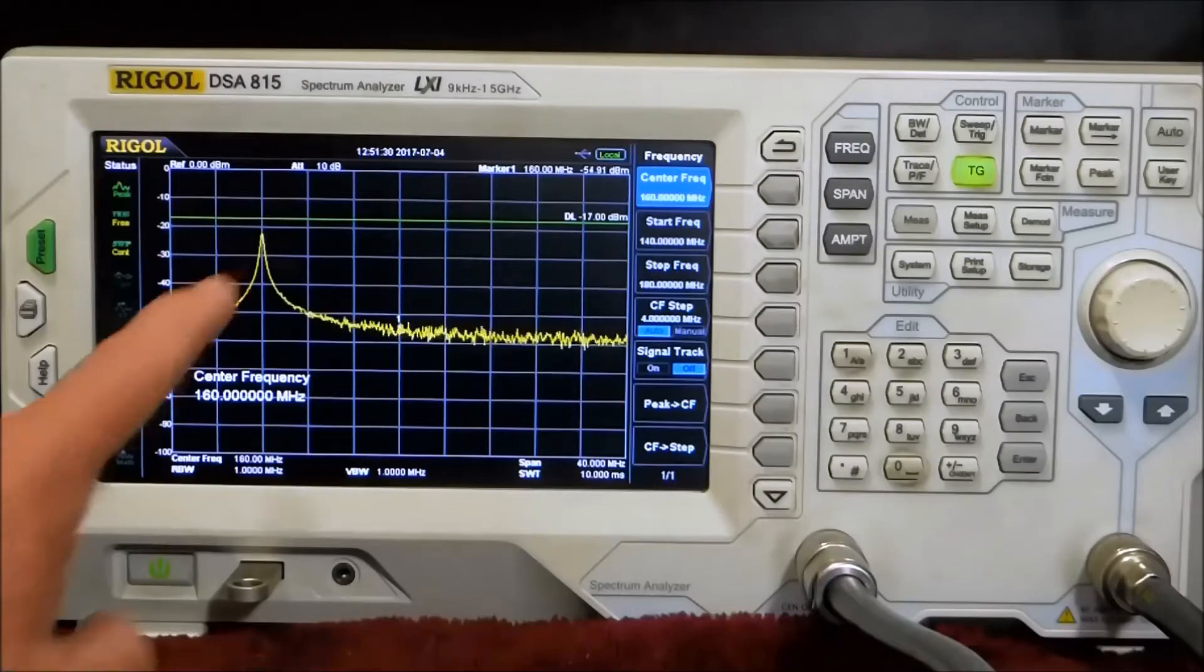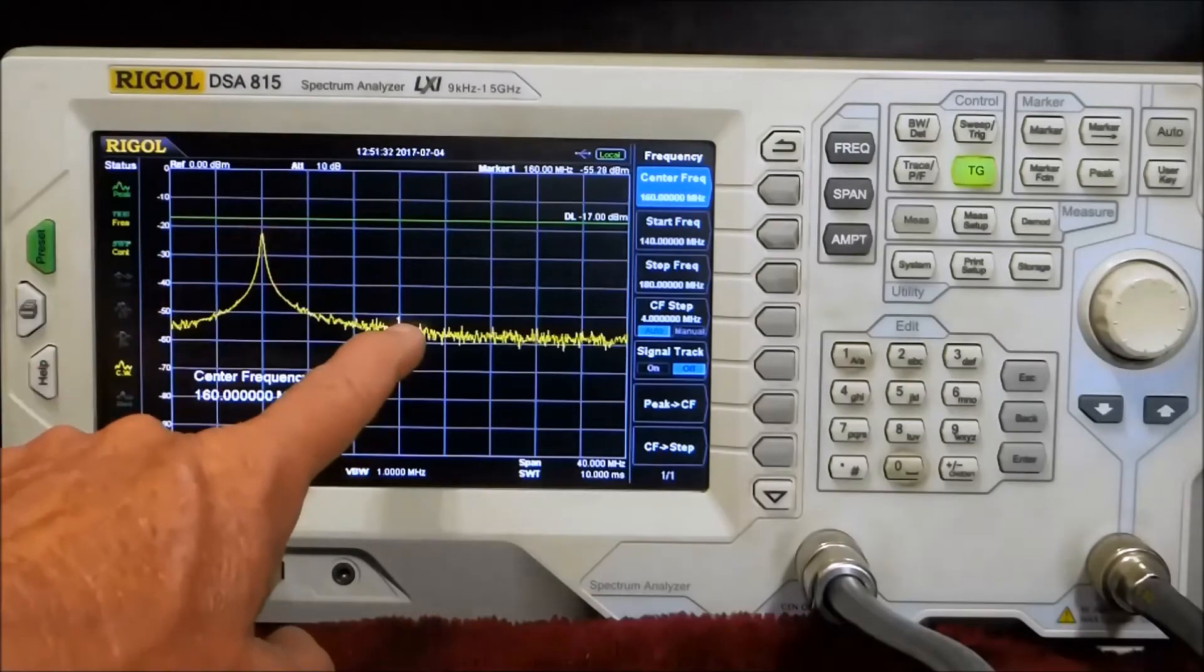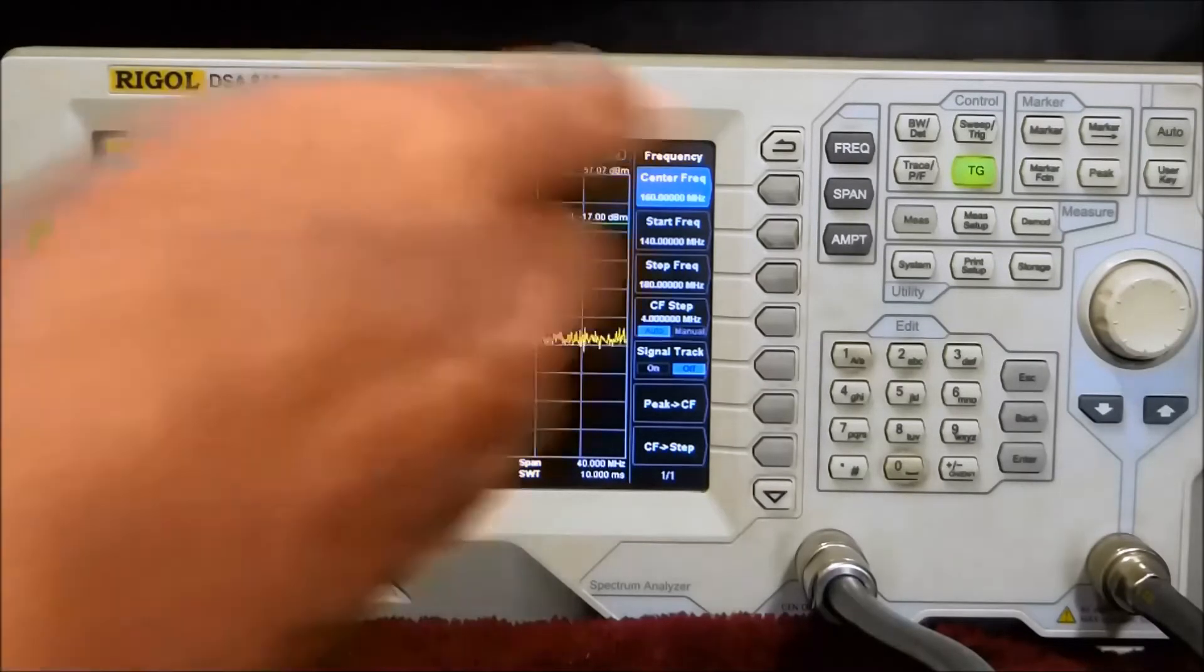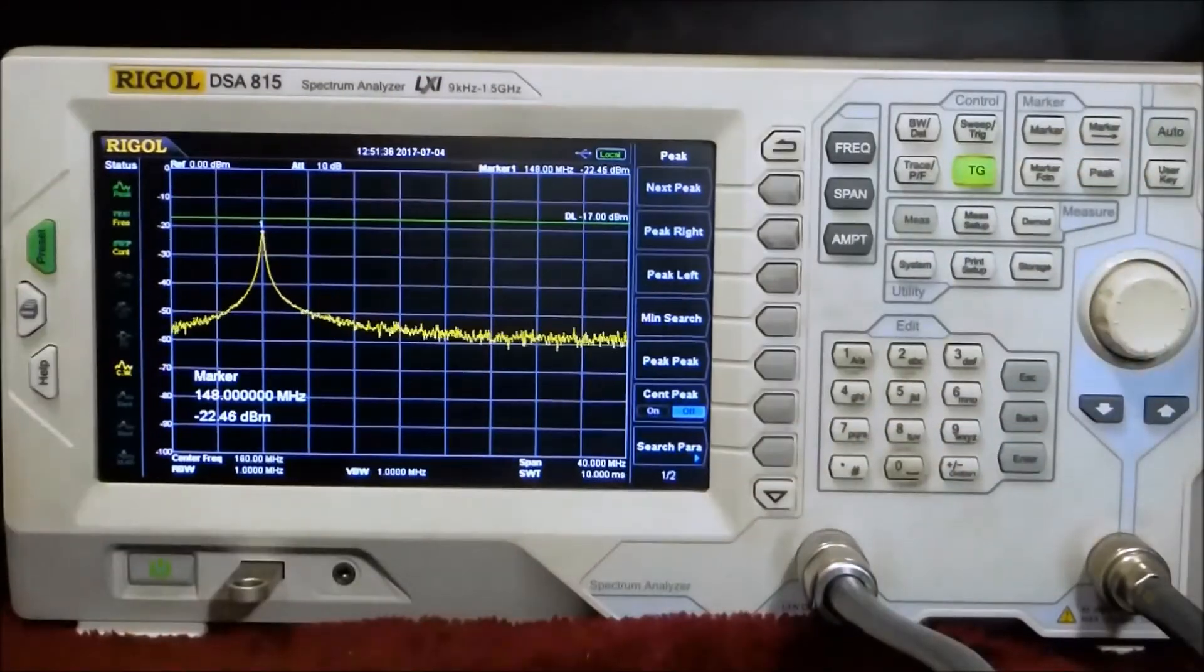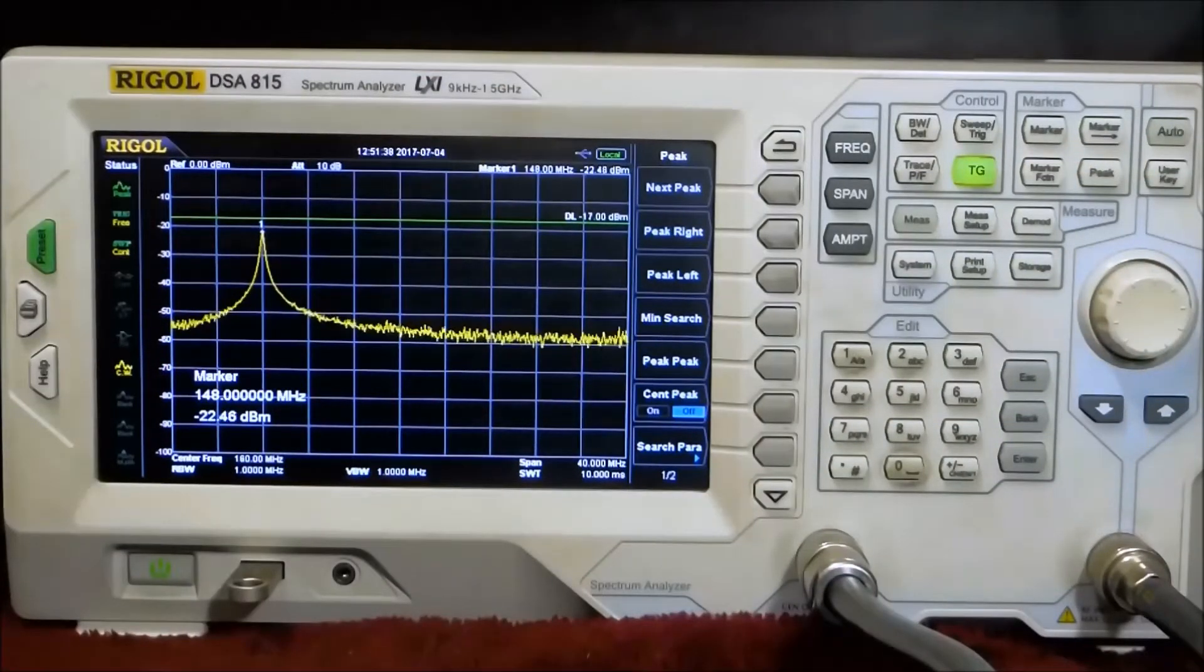So there's where we're resonant. This is 160 where the marker presently is. We'll hit the peak here and it says we're at 148.000 which is the lower edge of this particular cavity, the TWPC1505.